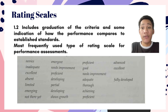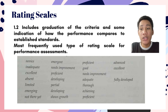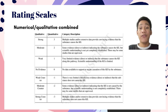The second type of qualitative descriptor includes graduation of the criteria and some indication of how performance compares to established standards. This is the most frequently used type of rating scale for performance assessment because it shows a rating scale that also provides feedback at the same time. For example, descriptors might include: needs improvement, still developing, proficient, and fully developed.